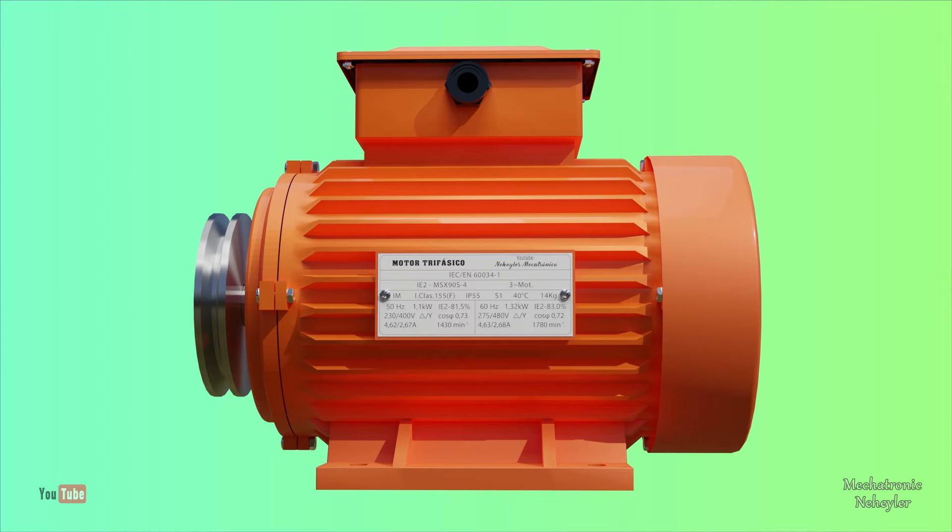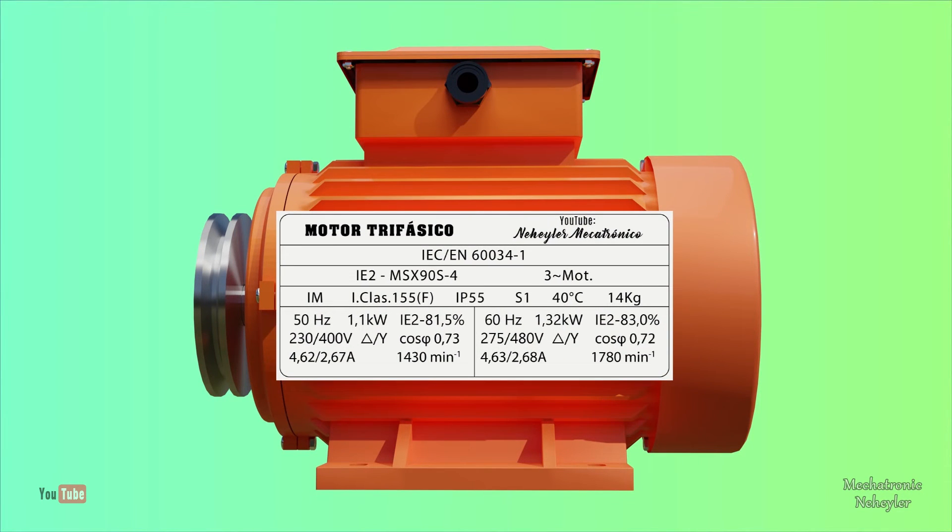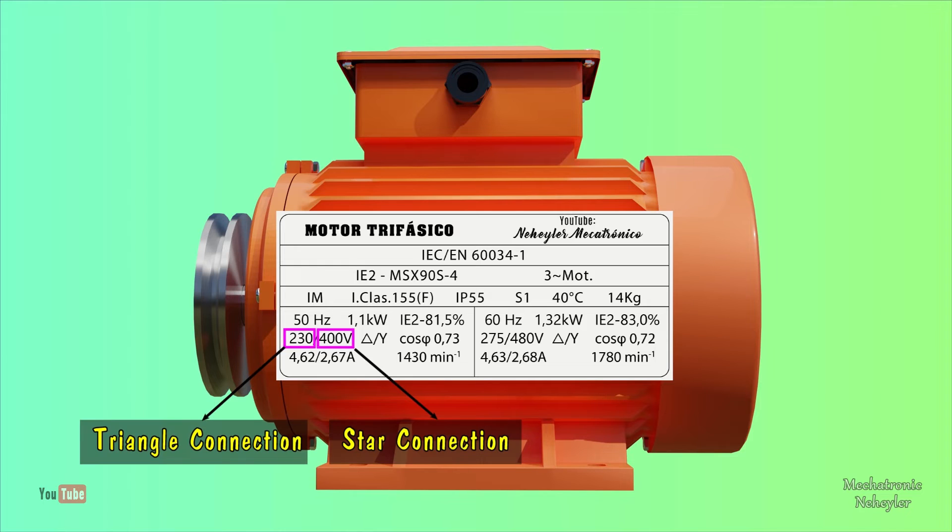On the data plate of the three-phase motor, two types of voltages are specified. Of which, a triangle connection must be made if you have the lowest voltage, in this case it indicates 230 volts. And a star connection must be made if there is a higher voltage, in this case it indicates that it is 400 volts.